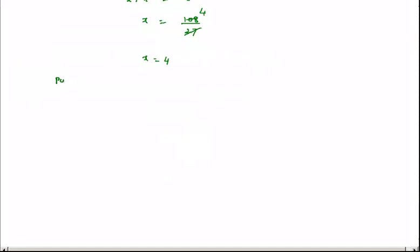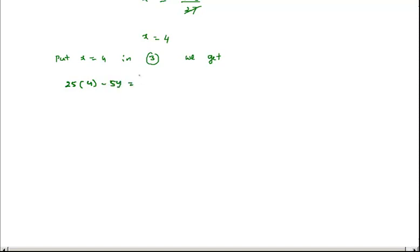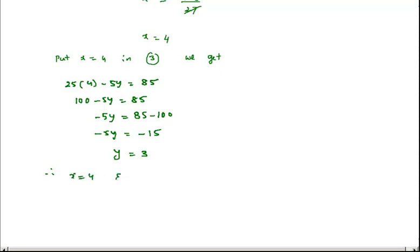Now putting x equal to 4 in equation 3, we get 25 into 4 minus 5y equal to 85. 25 into 4 is 100, so 100 minus 5y equal to 85. Then minus 5y equal to 85 minus 100, giving minus 5y equal to minus 15, so y equal to 3. Therefore x equal to 4 and y equal to 3 is the solution for the given equations. This finishes the section — I hope you understood.